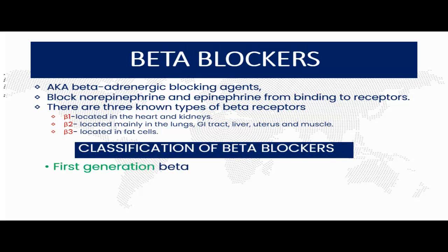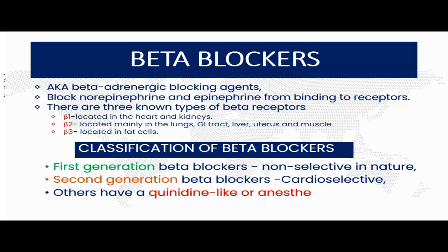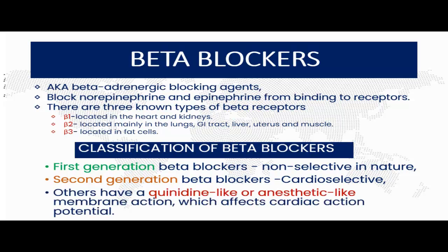Let's classify beta blockers. We can classify them into three classes. The first generation beta blockers are non-selective, meaning they work on both beta-1 and beta-2 adrenergic receptors. The second generation beta blockers are cardioselective, meaning they work by blocking the beta-1 adrenergic receptors in the heart. Other beta blockers have a quinidine-like or anesthetic-like membrane stabilizing action which affects the cardiac action potentials.